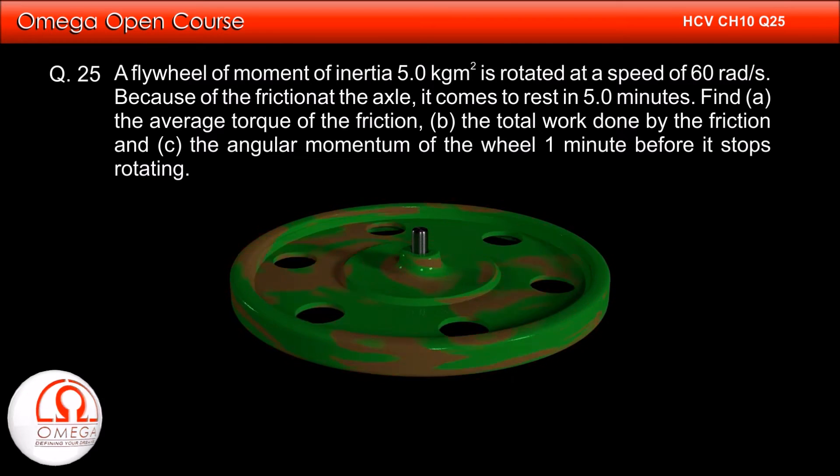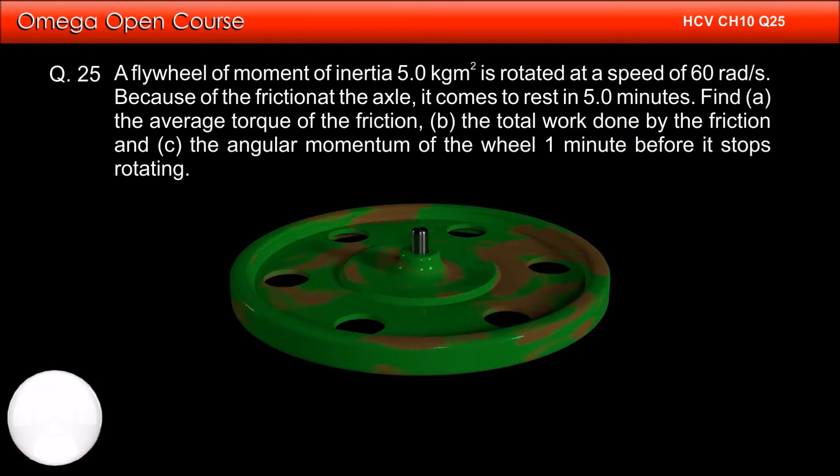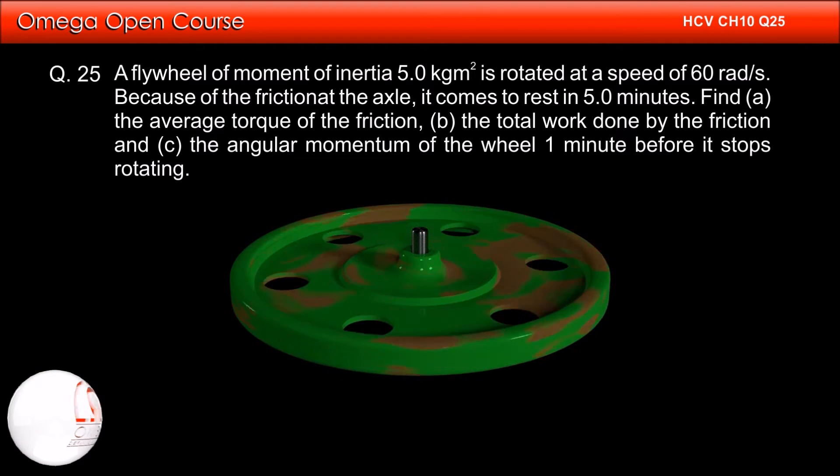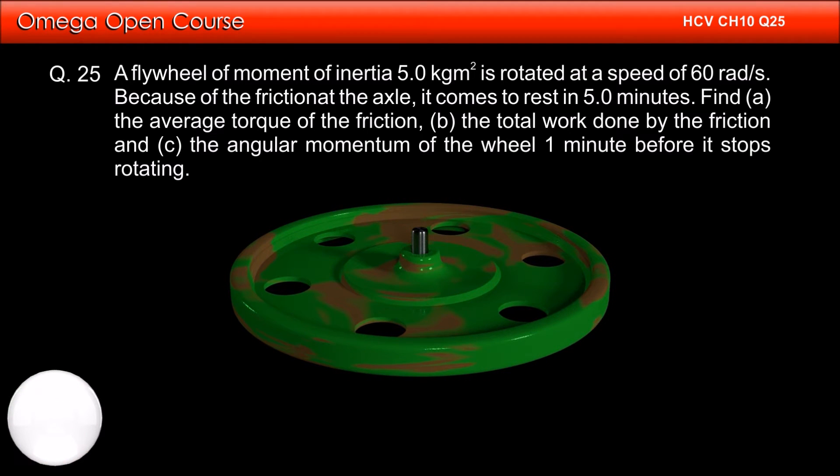A flywheel of moment of inertia 5 kg meter square is rotated at a speed of 60 radians per second. Because of the friction at the axle, it comes to rest in 5 minutes. Find (a) the average torque of the friction, (b) the total work done by the friction, and (c) the angular momentum of the wheel 1 minute before it stops rotating.